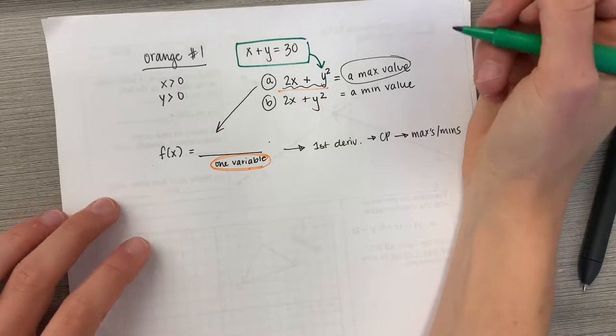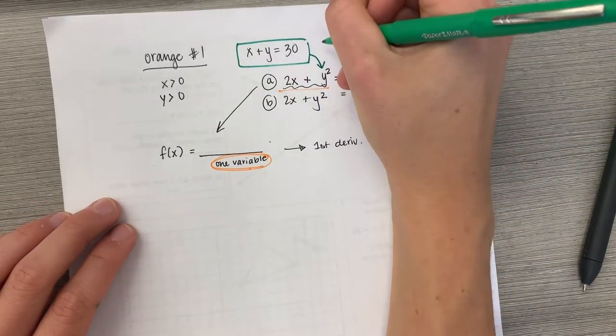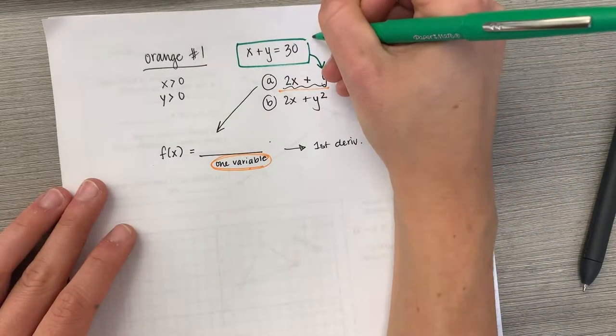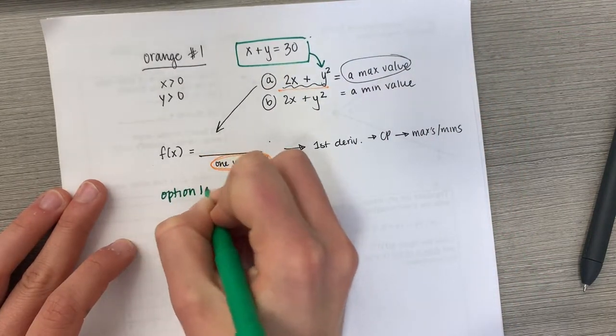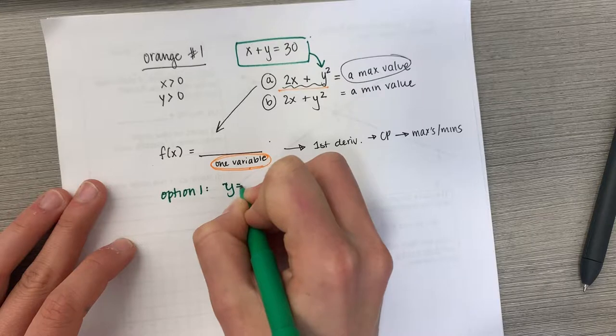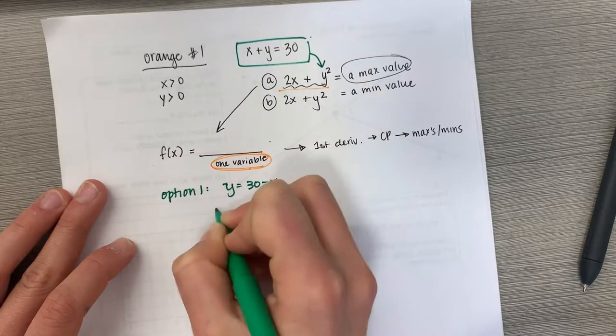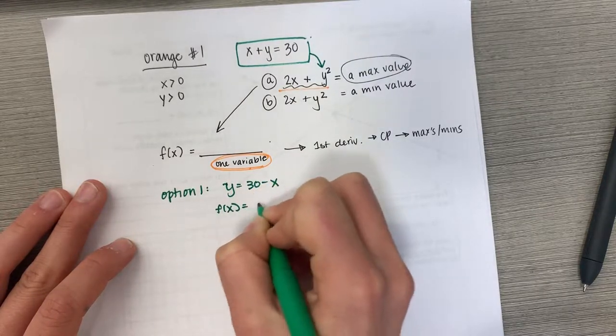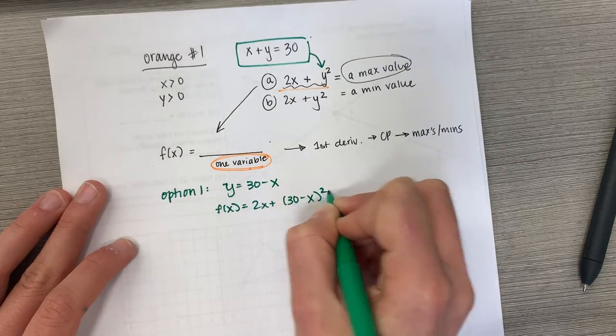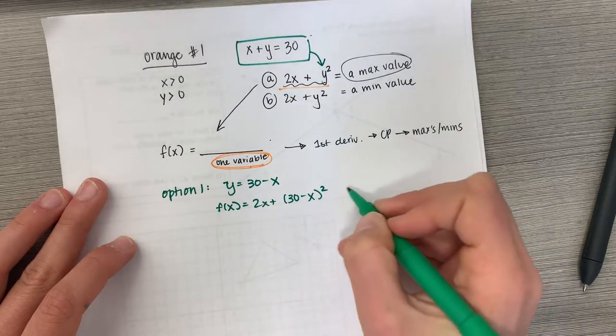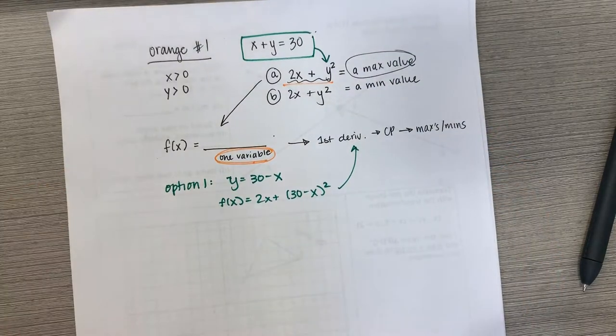You can plunk that in. You don't have to solve for x. You could actually say, so you could go like this. Option one: y is equal to 30 minus x. So f of x is equal to 2x plus 30 minus x squared. And take the exact same route.